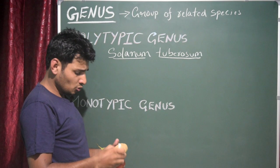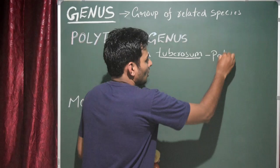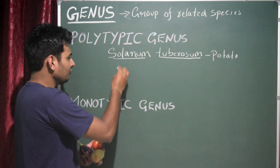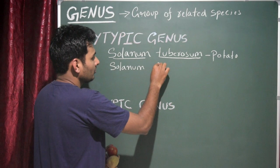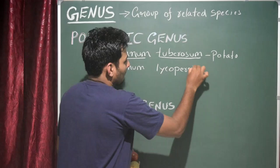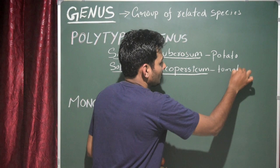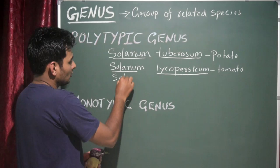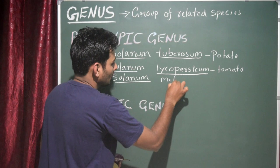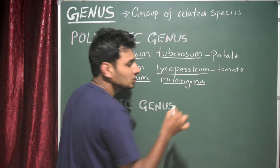Solanum tuberosum is the scientific name of potato. Now this is tomato — the scientific name is Solanum lycopersicum. Solanum is the genus and lycopersicum is the species name of tomato. And for brinjal, the scientific name is Solanum melongena. So Solanum melongena is the scientific name of brinjal.